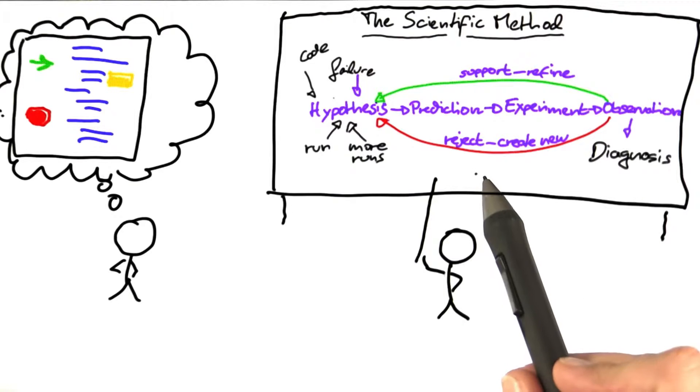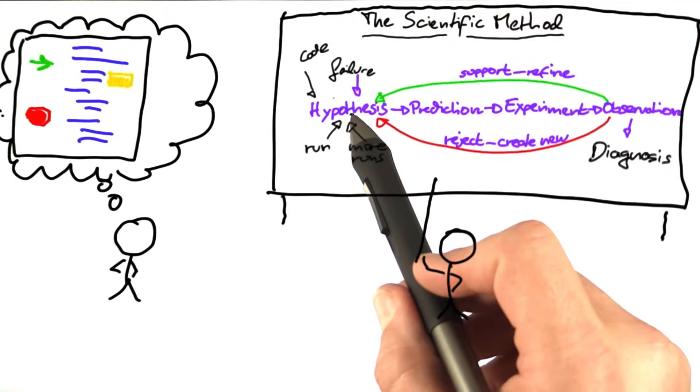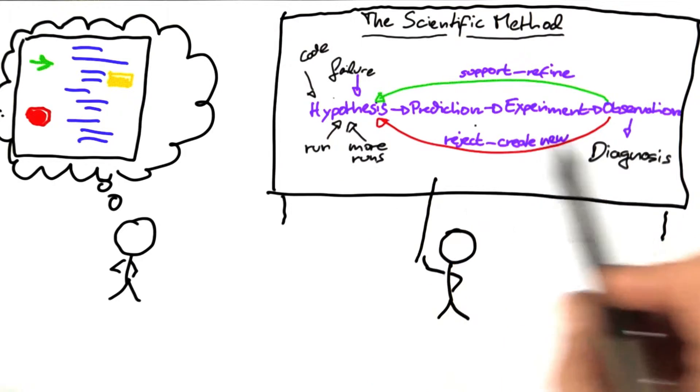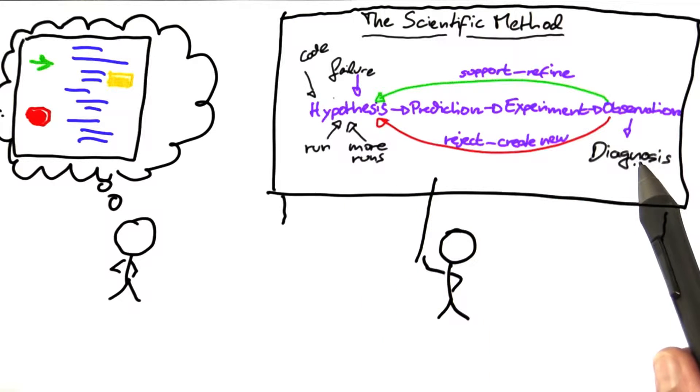At this point, we have systematically fixed a first bug using the scientific method to systematically come up with a hypothesis and refine it, refine it again, possibly come up with alternatives until we end up with a diagnosis.